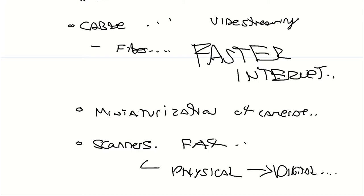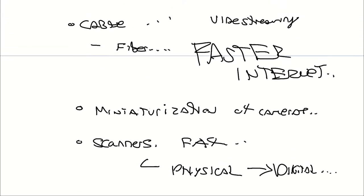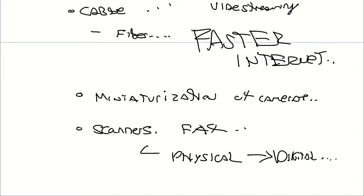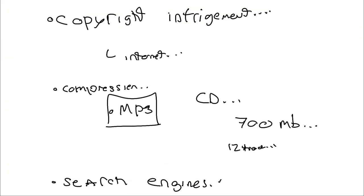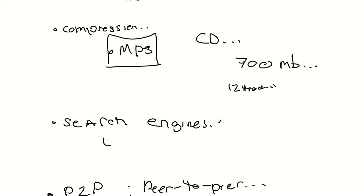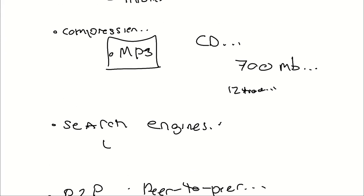All it takes is for you to go into a movie theater and stream a movie to all your friends on the internet — and that's copyright infringement. These are all facilitators of copyright infringement. Doesn't mean this technology was made solely for copyright infringement — one of the side effects of these amazing technologies is facilitating copyright infringement.